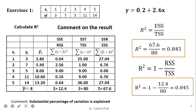After that, we can find out the RSS, TSS, and ESS. ESS is the difference between the average and the predicted value. TSS is the difference between the actual value and the average. And RSS is the difference between the actual value Y and the predicted value — that is, the sum of residual error.